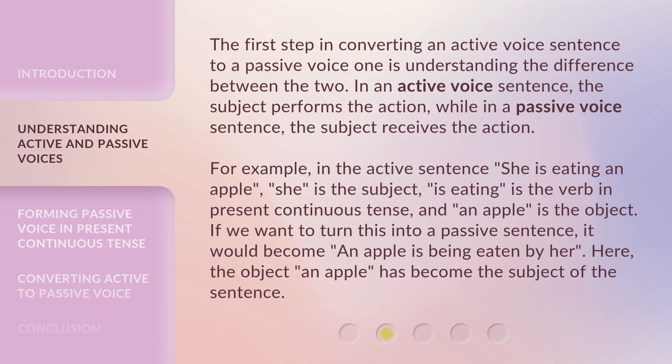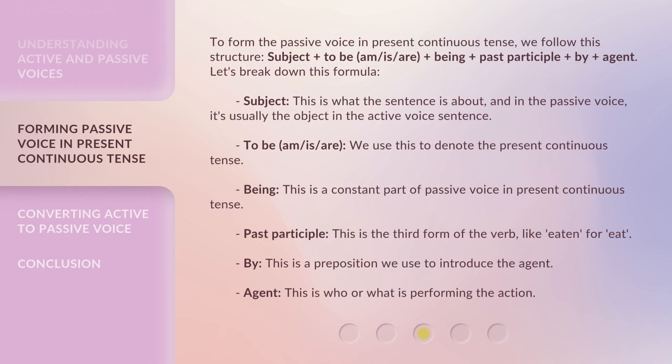Here, the object 'an apple' has become the subject of the sentence. To form the passive voice in present continuous tense, we follow this structure: Subject plus to be (am, is, are) plus being plus past participle plus by plus agent.